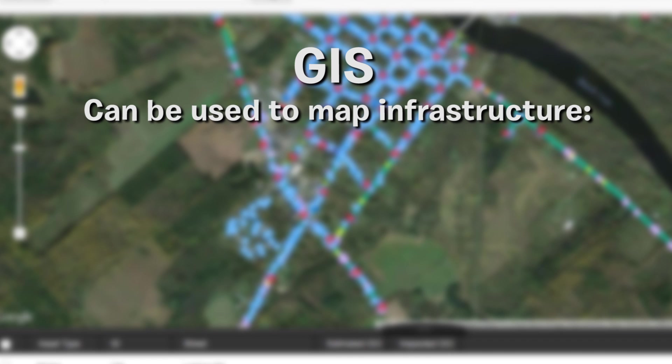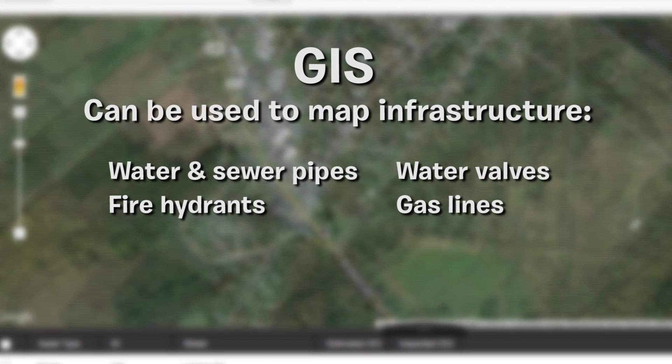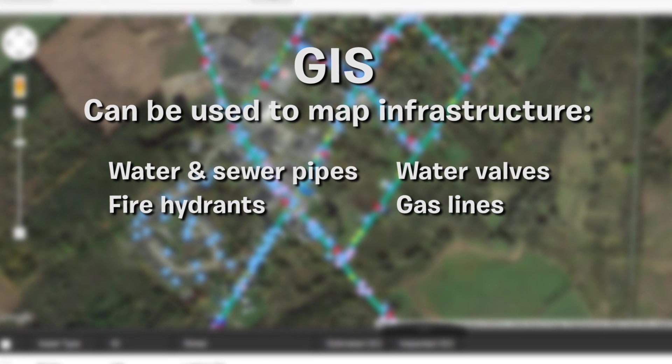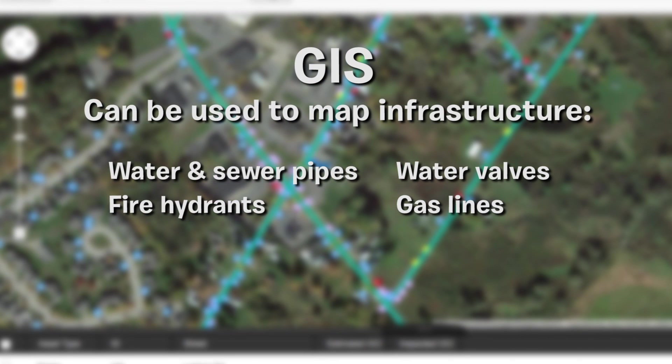GIS can be used to map infrastructure such as water and sewer pipes, water valves, fire hydrants, and gas lines, so that they can be easily found in an emergency or for repair.